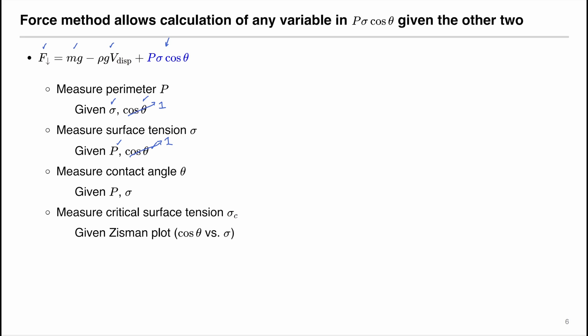If given the perimeter and contact angle, we can measure the surface tension. In this experiment, you will determine the surface tension of an unknown liquid using a clean platinum wire of known perimeter. Because platinum has high surface energy, it is wet out by almost all liquids, so cosine theta is also known. Finally, if given the perimeter and the surface tension, we can calculate the contact angle. You will determine the advancing and receding contact angles for a series of probe liquids interacting with the Teflon rod, and prepare a Zisman plot to determine the critical surface tension of the Teflon surface.